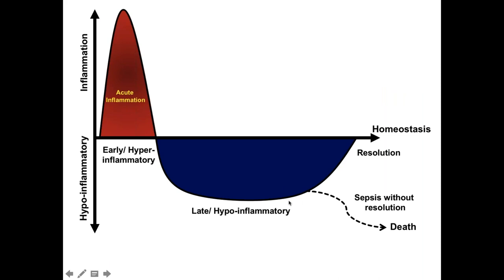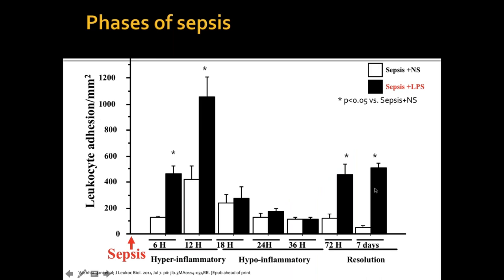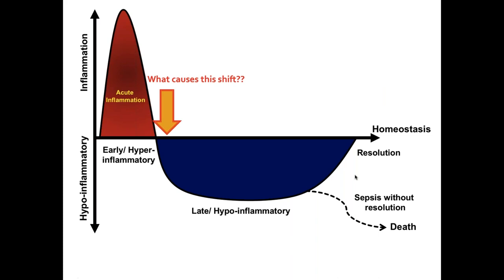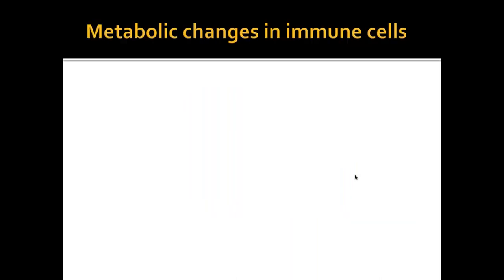If the hypoinflammatory phase didn't occur, these mice died — so mind you, the bias here is these are surviving mice. Now we know that immunosuppression, or at least hypoinflammation, happens. But what causes this shift? That's the golden question — what causes this shift? And that brings me to the next half of my presentation.